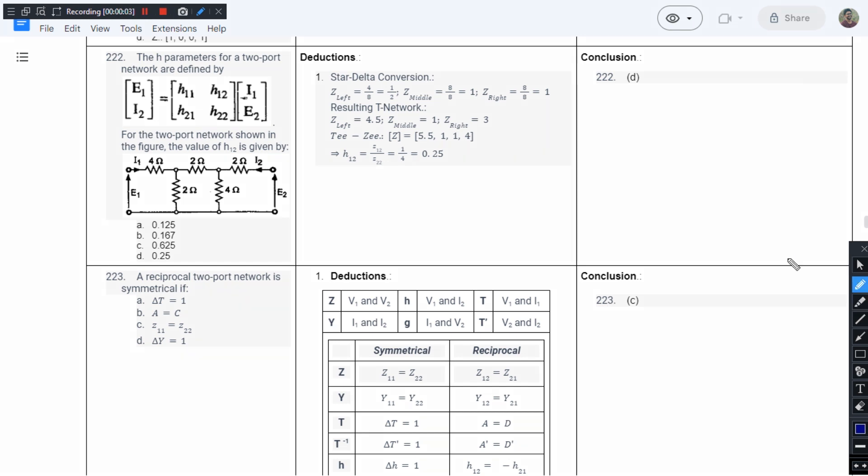This is question number 222 from chapter 1 of JB Gupta's book. The H parameters for a two-port network are defined by E1 equals H11, H12, H21, H22, I1, E2. For the two-port network shown in the figure, the value of H12 is given by...